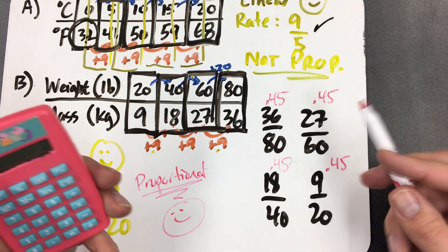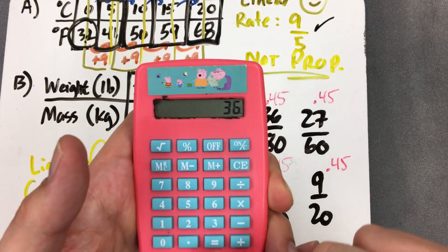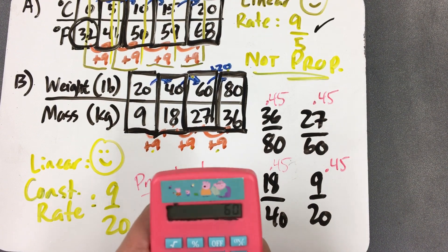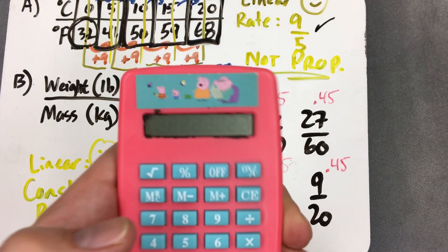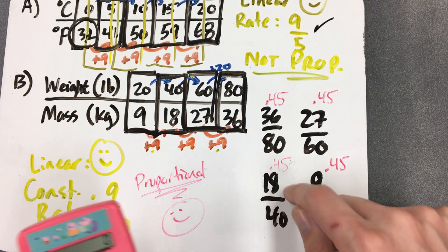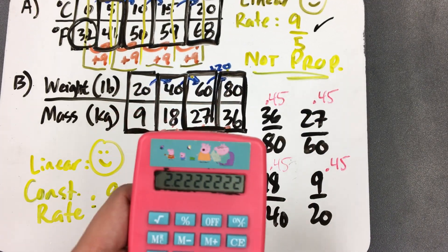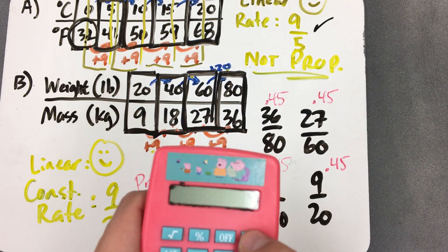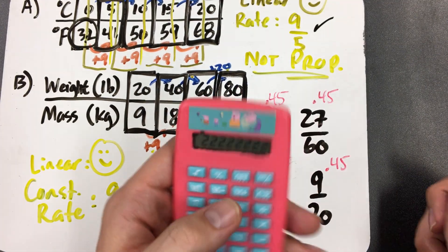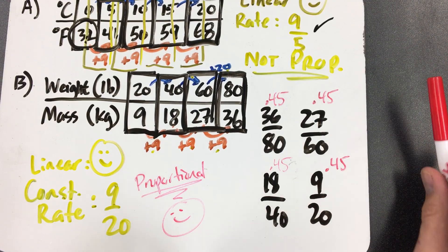Now, just to show you, if you had divided these backwards, if you did 80 divided by 36, you would have had 2.2 with a repeating bar. But if you divided all of these in that same way, 60 divided by 27, if you divided all of them backwards, you would have ended up with the same answer all the time. They all would have been 2.2 with a repeating bar. So even if you divide it backwards, you don't do it the way you're supposed to, you'll still end up figuring it out the right way.